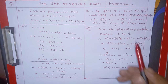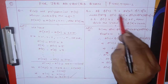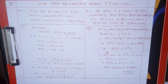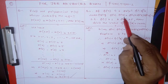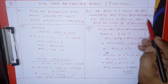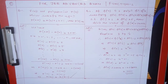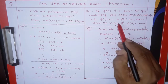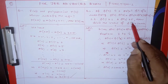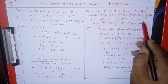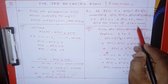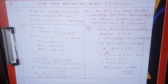Next problem: f(x) is a polynomial satisfying f(x)·f(y) = f(x) + f(y) + f(xy) - 2, with f(1) = 2 and f(2) = 5. Find the value of f(4) + 2004.